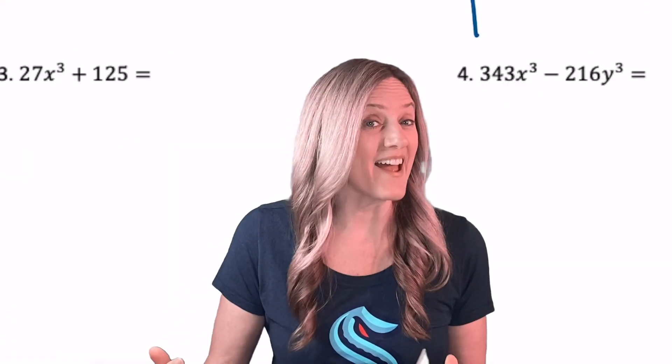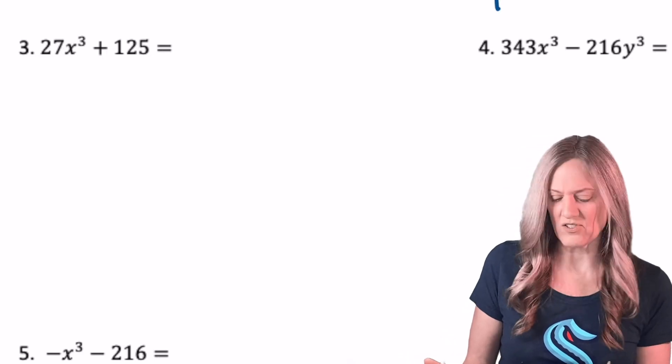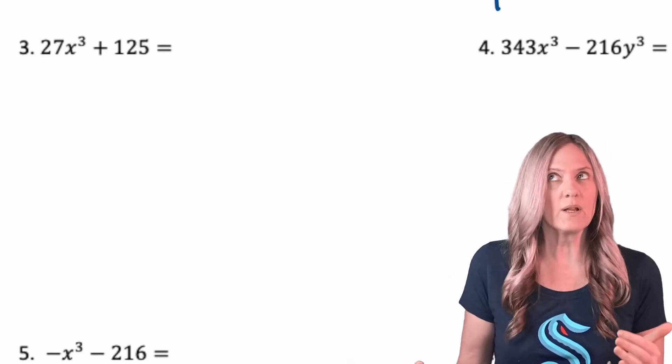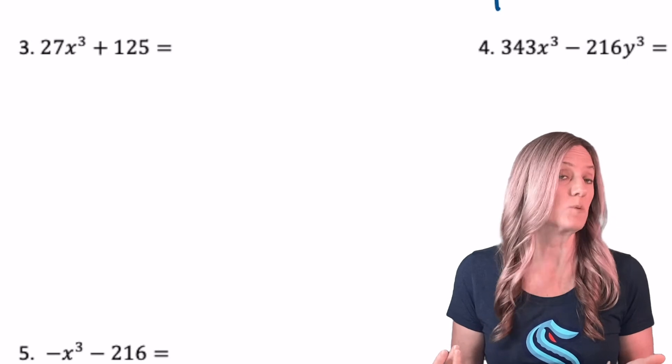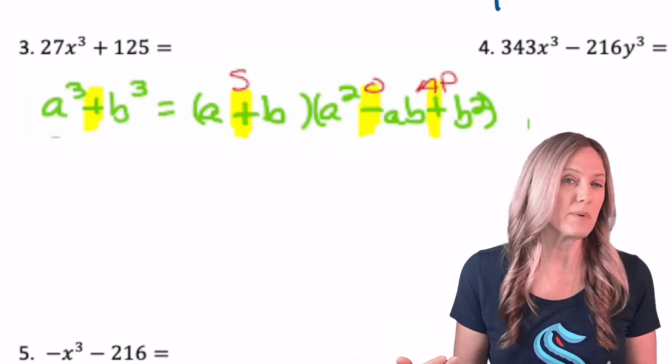Again, that trinomial is not going to factor any further, so this is my official factored form. Feels like we're getting the hang of this, doesn't it? But look at number three. This one has 27x cubed plus 125. Well, I know 27 is three cubed and 125 is five cubed, but can we get it into that a cubed plus b cubed format?